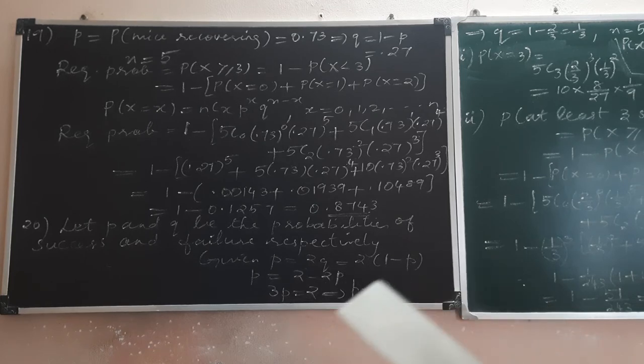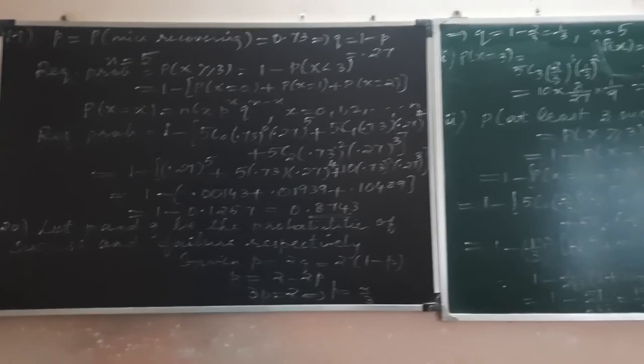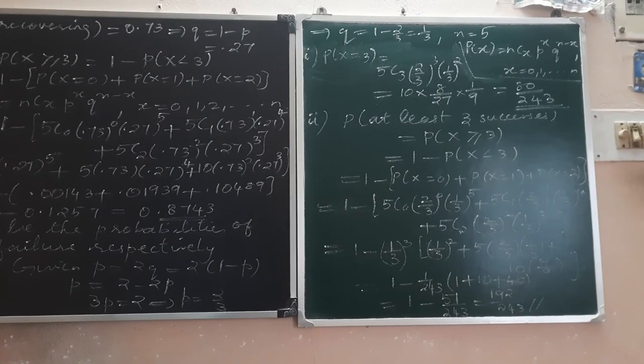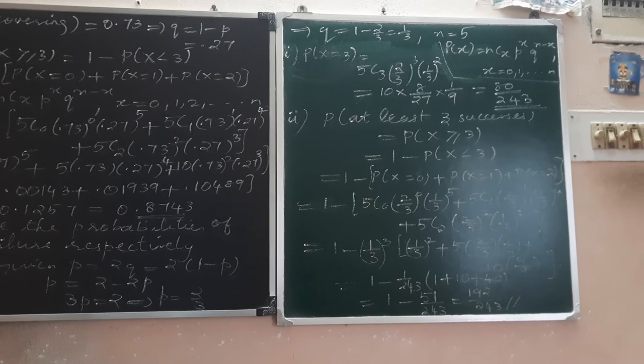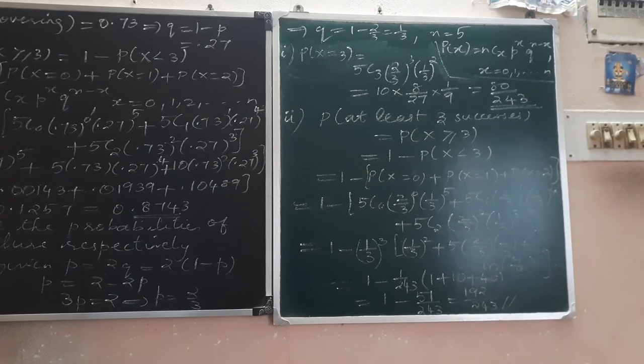So P equals 2 times (1-P), which gives 2 minus 2P equals P, that is 3P equals 2, or P equals 2 by 3. P is 2 by 3, Q is 1-P, that is 1 by 3, and n equals 5.